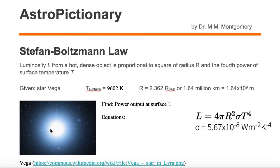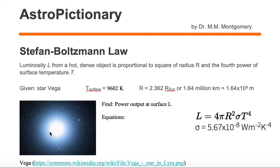We're given star Vega as our hot, dense object. Star Vega has a surface temperature of 9602 Kelvin and a radius of 2.362 times the radius of the sun — roughly 2 to 2.5 solar radii — or equivalently, 1.64 million kilometers, which equals 1.64 times 10 to the 9th meters. We want to find the power output, i.e., the luminosity, at its surface.